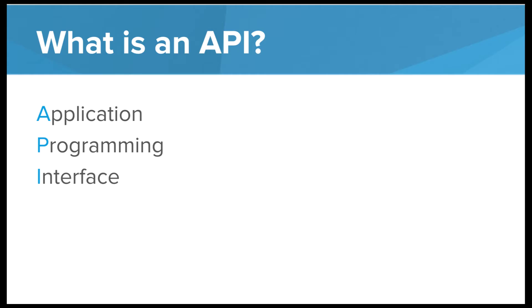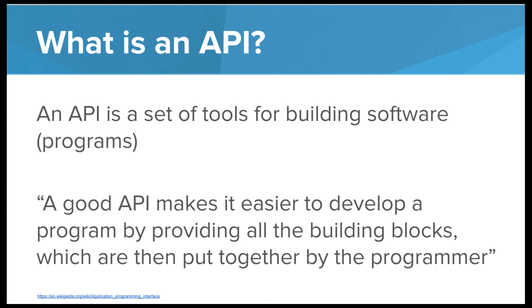So what is an API? It's an application programming interface. That's what it stands for, but that's not really important. What is important is what it actually means. An API is a set of tools for building software, which is just another word for program. A good API makes it easier to develop a program by providing all the necessary building blocks, and these building blocks are then put together by the programmer.